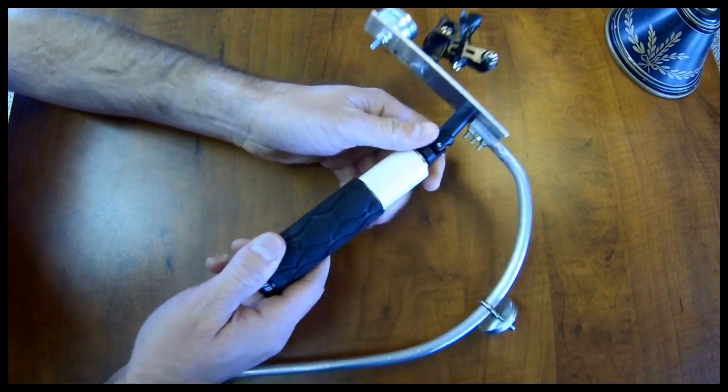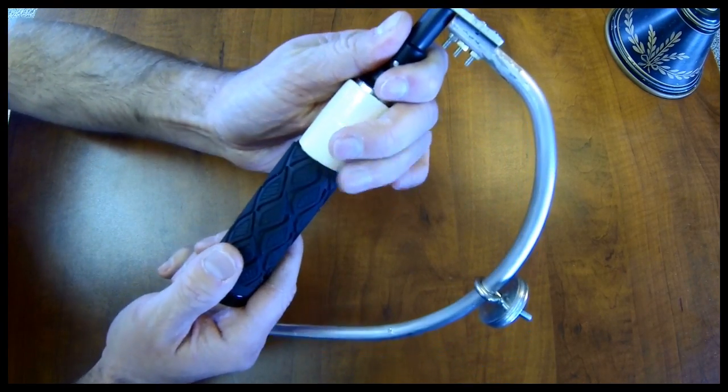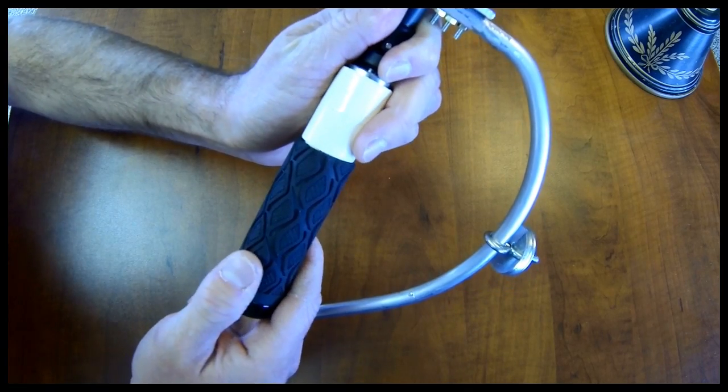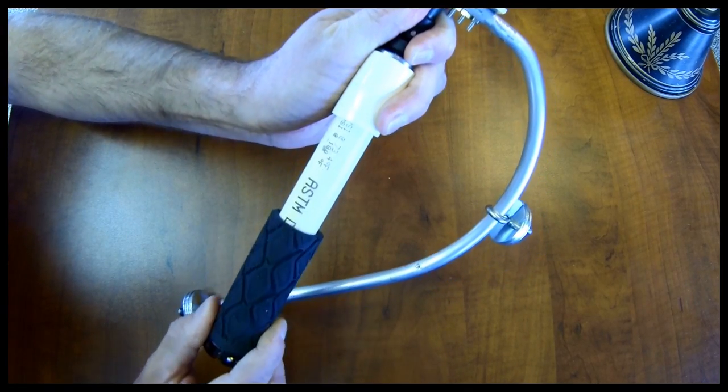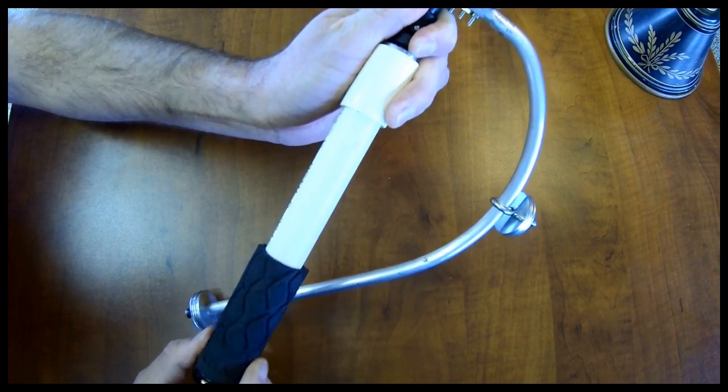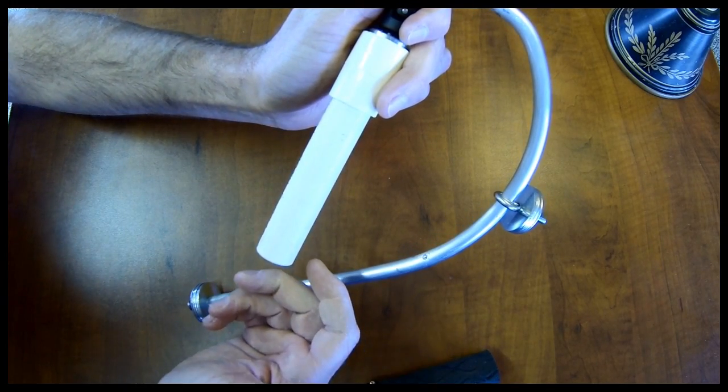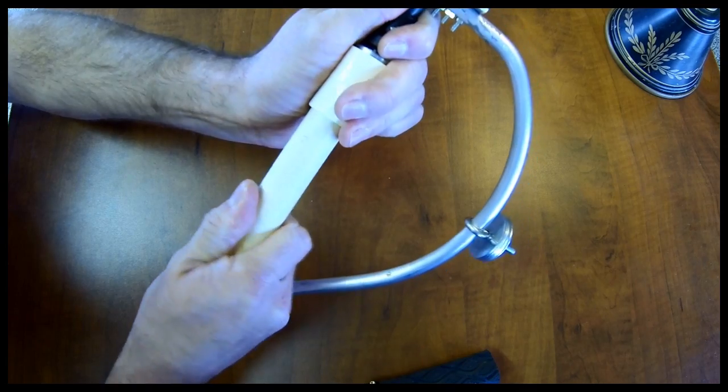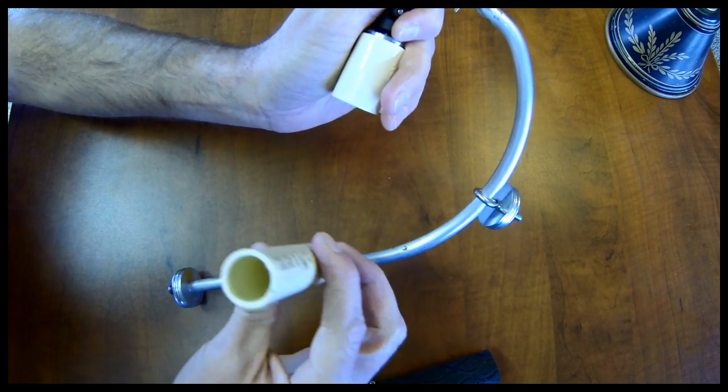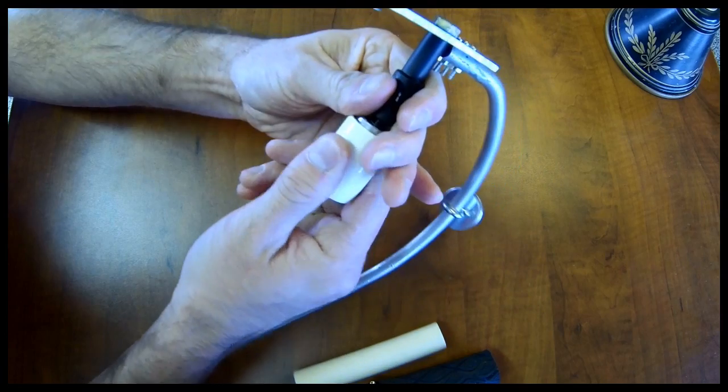I used 3/4 inch PVC, CPVC actually, because it fits a bicycle grip perfectly. Most of these parts I had so that's what I started out with. Just a 3/4 inch piece of CPVC and a coupler.